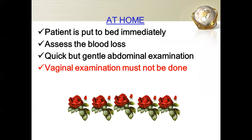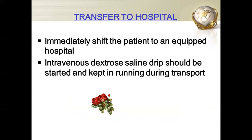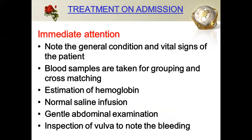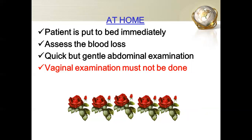If the woman starts bleeding at home, she should immediately be put to bed and the amount of blood loss assessed. She should then be transferred to the hospital. During transport, a saline drip can be kept. After admission, there should be no vaginal examination — only a quick and gentle abdominal examination.